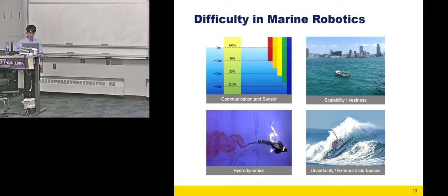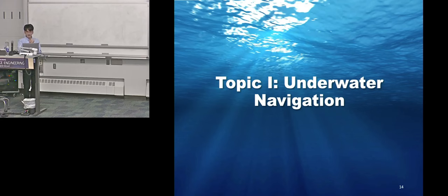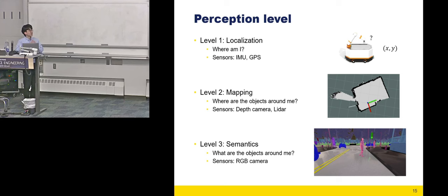Now let's see the research I did. First topic is about underwater navigation. In order for robots and living creatures like humans or animals to behave, they need to use sensors to gather information about themselves and surroundings. We call that process as perception. The most fundamental aspect is knowing their exact location. For short distance, we can use just IMU sensors.